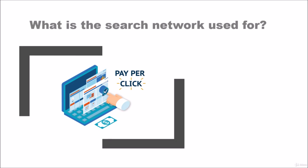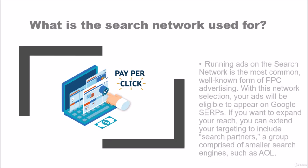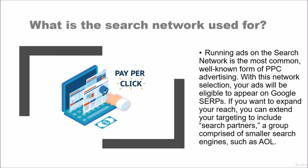What is the search network generally used for? Running ads on the search network is the most common, well-known form of pay-per-click advertising. With this network selection, your ads will be eligible to show on Google's search engine result pages. If you want to expand your reach, you can extend your targeting to include search partners, a group comprised of smaller search engines such as AOL.